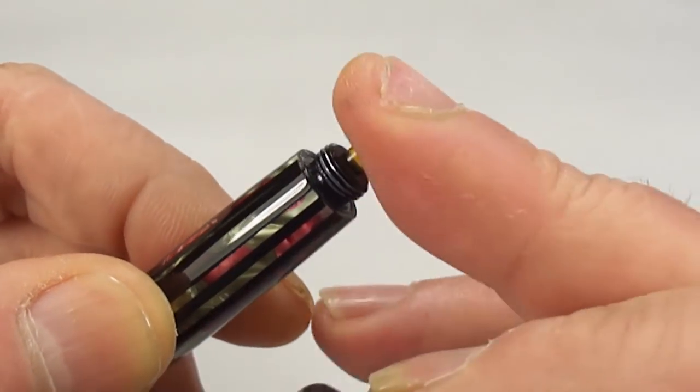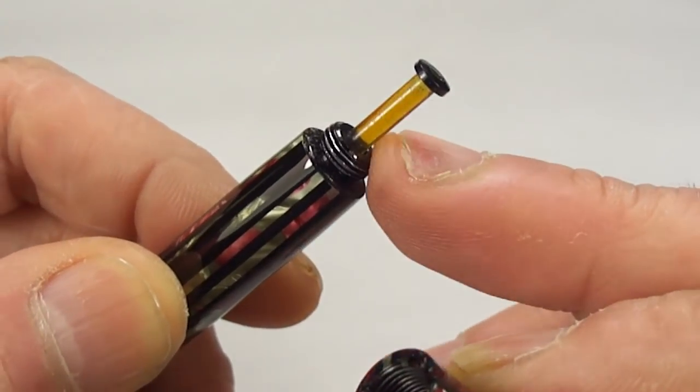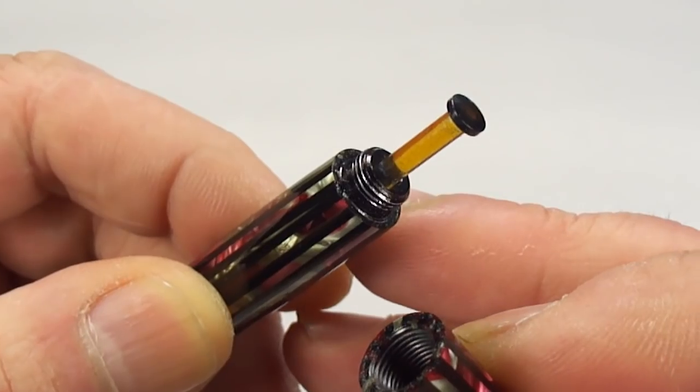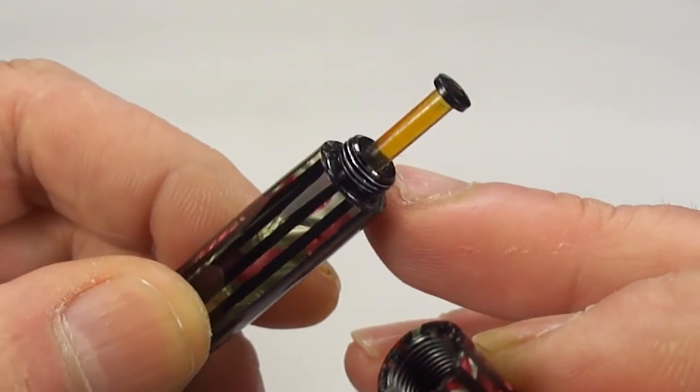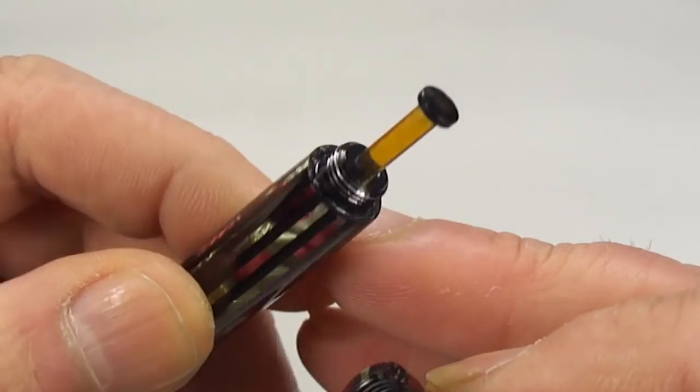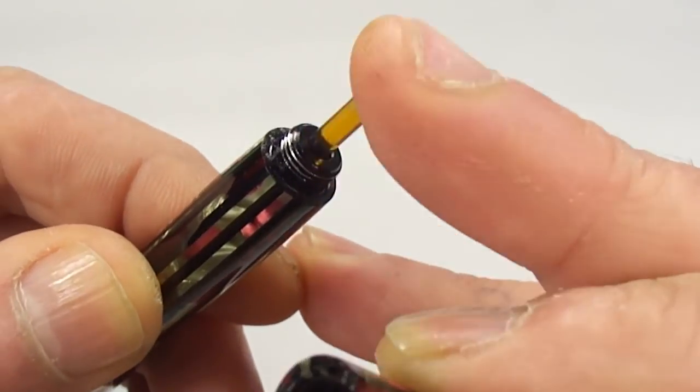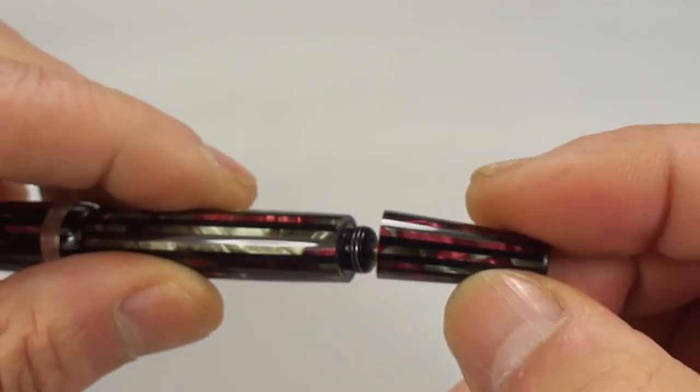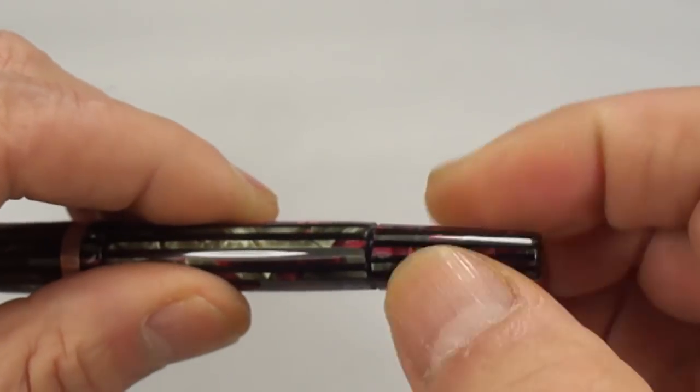Again, the earlier models, they had the aluminum speedline filler. So again, this one, we can sort of tell just simply by this plastic filler that it is a slightly later version. So let's pop that back on like so.